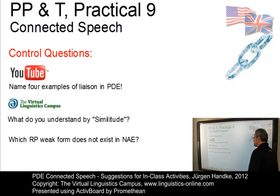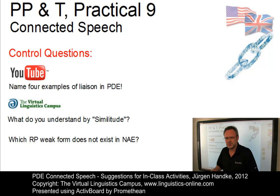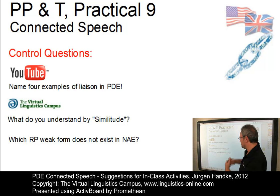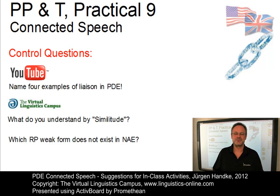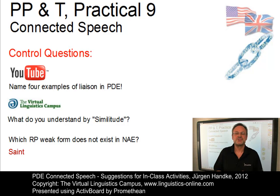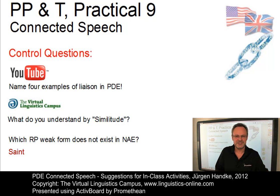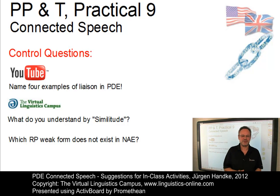Another question that tells you whether students have accessed the content is about a weak form that exists in RP but not in North American English. This is a very tricky question. The answer is the form 'saint'. The form 'saint' can be weakened in RP — 'St. Paul's Cathedral', for example — but in North American English it would remain 'saint', as in 'Saint Paul's'. So this is a tricky but very useful question.